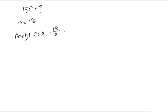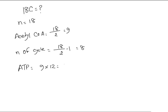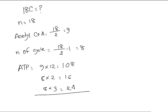Let's see if it's stearic acid, which is an 18-carbon fatty acid, how many ATPs will be produced. Here n = 18, so acetyl-CoA production is 9 and the number of cycles will be 8. So the number of ATP produced will be 9 × 12 = 108 from acetyl-CoA, plus 16 from FADH2 and 24 from NADH2, giving 148 ATP. Two ATP is expended, so 146 ATP is generated net. That was the case for even number of carbons.